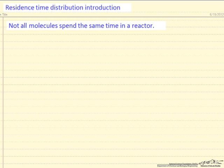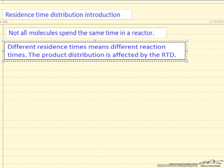This is the thing to keep in mind, and the question is why is that important? It's important because different residence times mean different reaction times, and this can significantly affect the product distribution when we have more than one reaction taking place, and almost every system has more than one reaction.